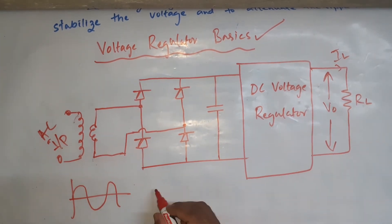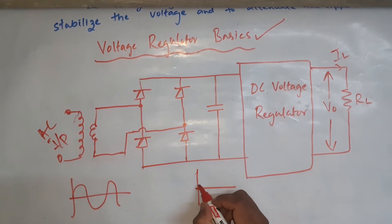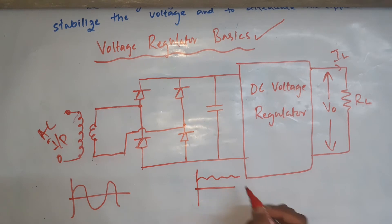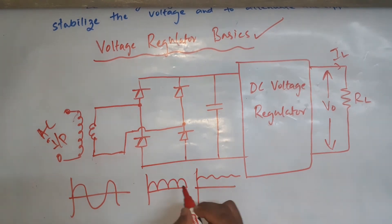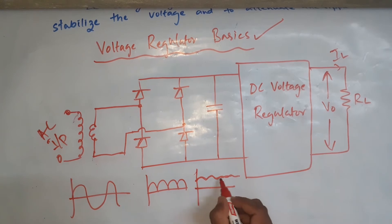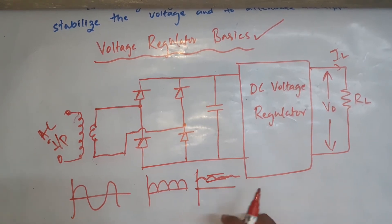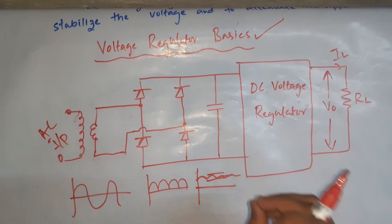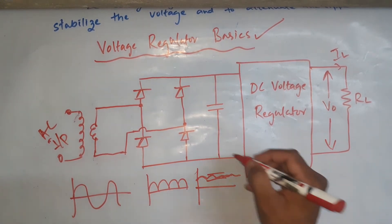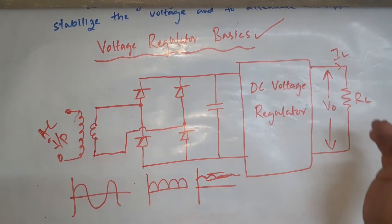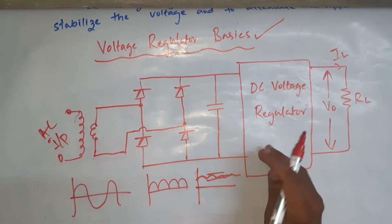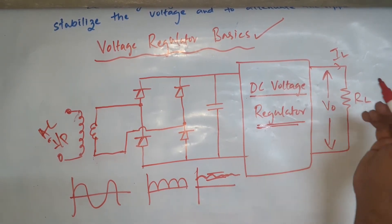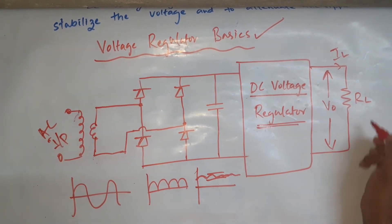After rectification, for example, before the capacitor the output will look like a pulsating waveform. After the capacitor it becomes smoother, but still there will be some ripples. If you zoom in you can find even more variation. These variations in the input should not affect your final output voltage, so before giving it to the load we add a DC voltage regulator into the circuit.